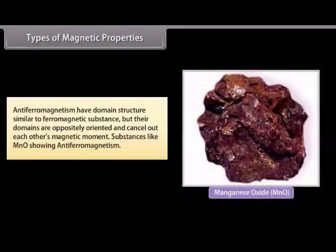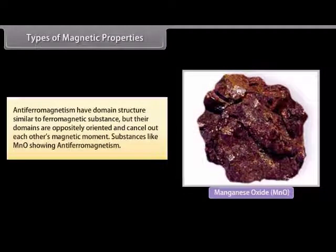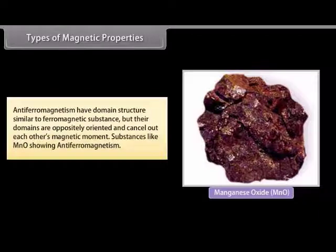Antiferromagnetism: these substances have a domain structure similar to ferromagnetic substances, but their domains are oppositely oriented and cancel out each other's magnetic moment. Substances like MnO show antiferromagnetism.